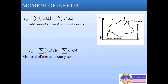Here in this diagram, you can see the area A, and in this area we are considering a small elemental area DA. The distance of this elemental area from the Y axis is X, and from the X axis the distance is Y. So basically, the moment of inertia of any lamina is the second moment of all the elemental areas.